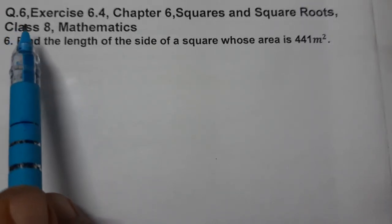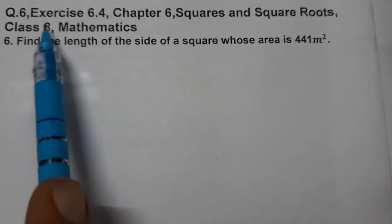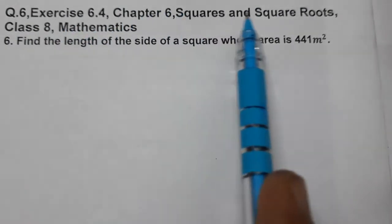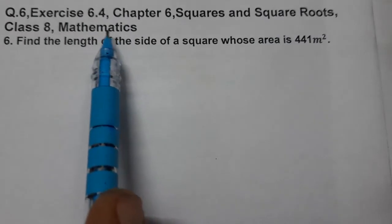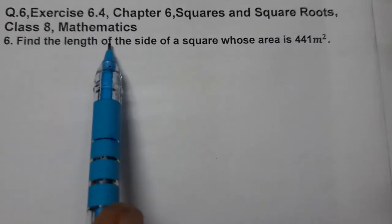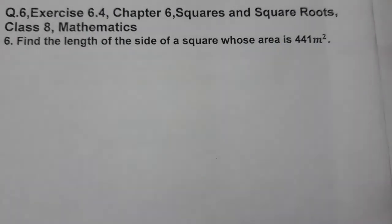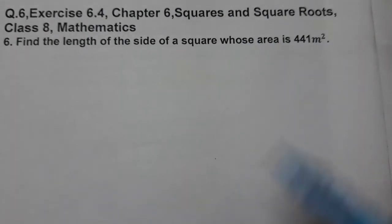Hello students, today we are going to do question number 6 of Exercise 6.4, Chapter 6: Squares and Square Roots, Class 8 Mathematics. Find the length of the side of a square whose area is 441 meter square.